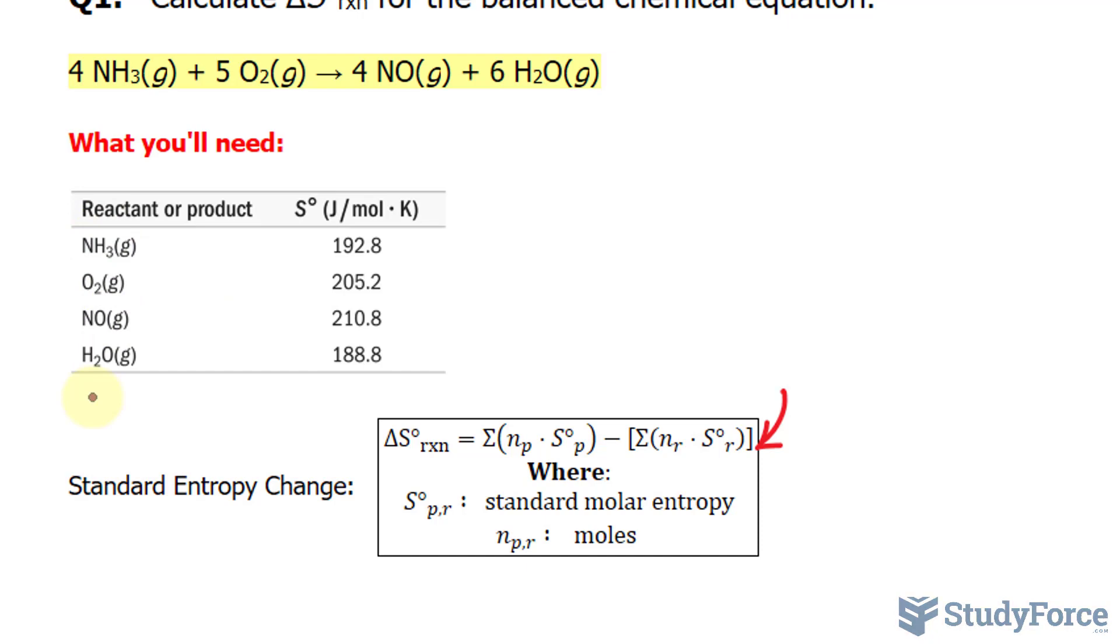Let me show you how to use this formula. So we have the standard entropy change, delta S, for the reaction is equal to, focusing in on the products: we have 4 times NO, which has a standard molar entropy of 210.8, plus 6 molecules of the standard entropy for water.